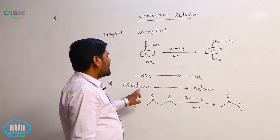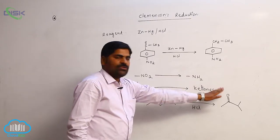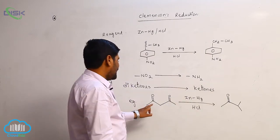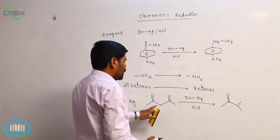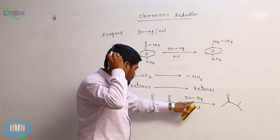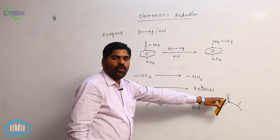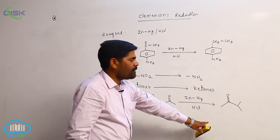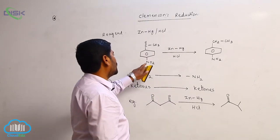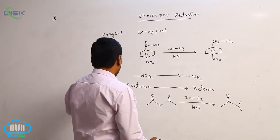When diketones convert into ketones, isomerization takes place. This diketone reacts with Clemmensen reagent to form a monoketone with isomerization. The nitro group also converts into an amino group.